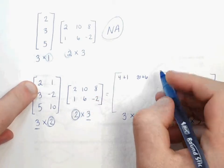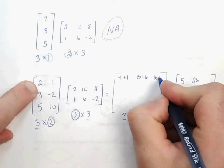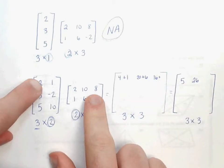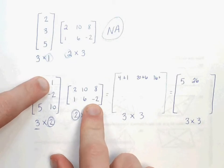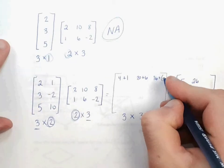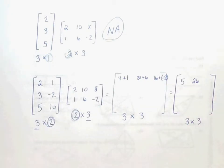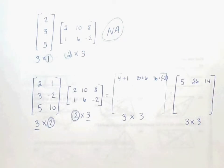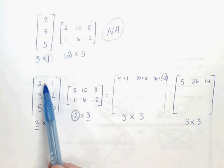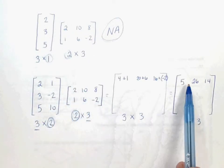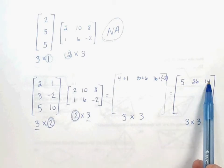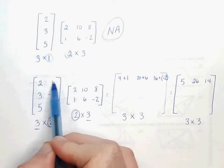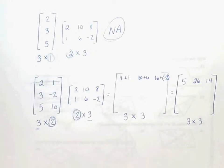2 times 8 would be 16. Slide over and down. 1 times negative 2 would be negative 2. So we get 16 plus negative 2, which would be 14. So we used this row with each column, and we've got three elements in our matrix so far. We're done with that row, because we've used it with all the columns in the second matrix.